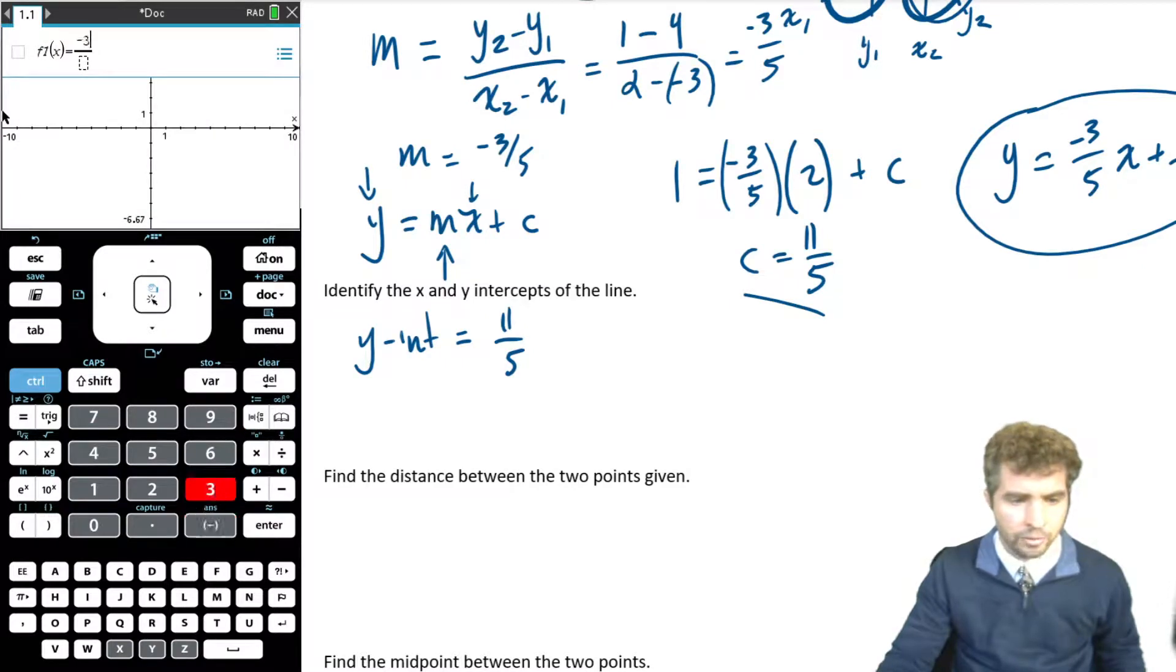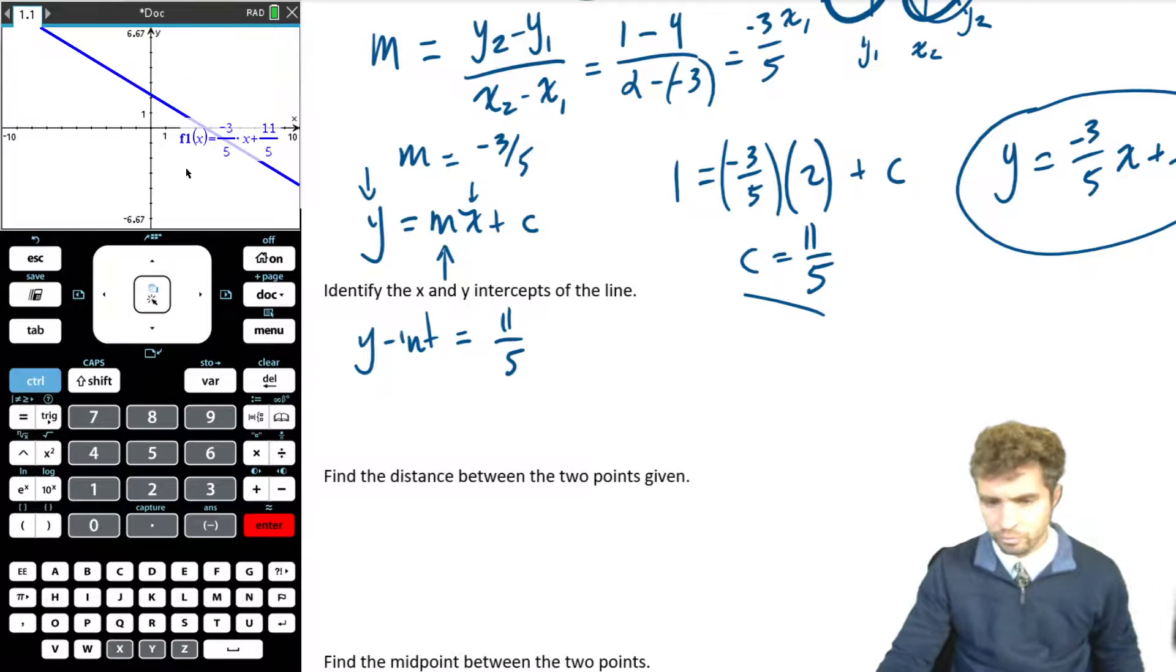So this was negative 3 fifths x, plus another fraction, 11 fifths. Okay, that's my fraction. I can graph that. And so I've got my y intercept. It's 11 fifths up here. So that's just a little over two, two and a bit, right? Two and one fifth. And then my x intercept looks like it's over here somewhere around one, two, three, just less than four.